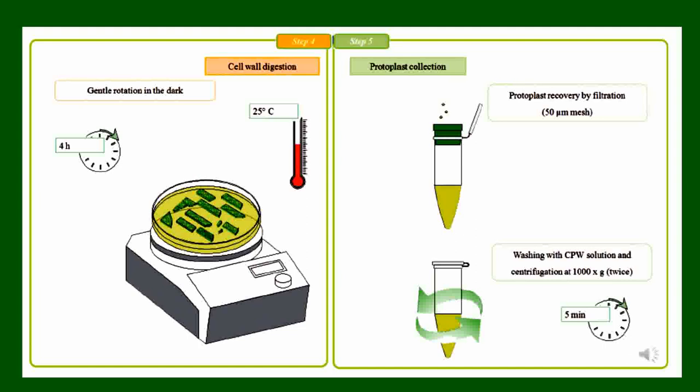In the next step, the protoplast-containing solution is strained to separate protoplasts from cell debris. Afterwards, the enzyme-protoplast solution is centrifuged to collect the protoplasts separately. Once separated, enzymes are then removed from the collected protoplasts.